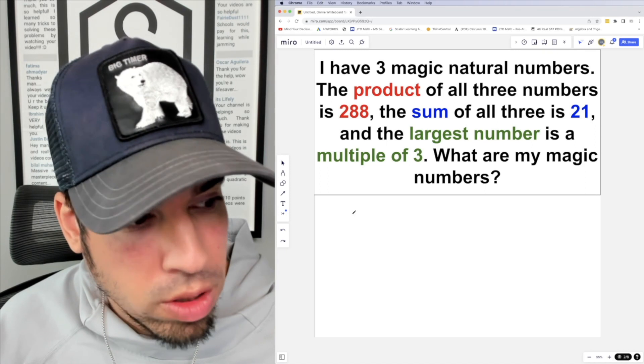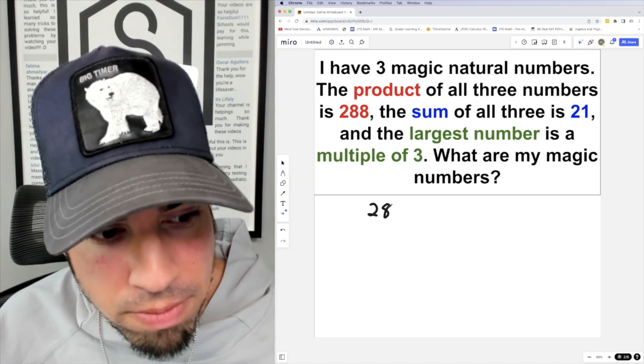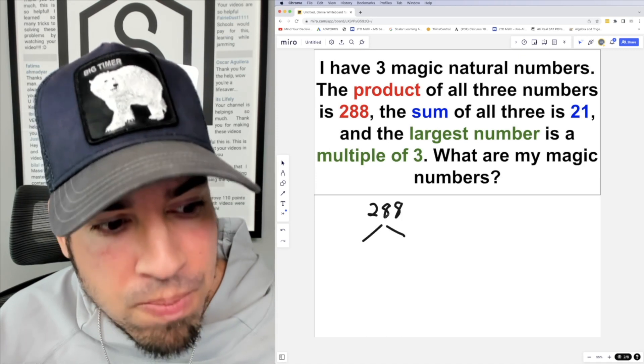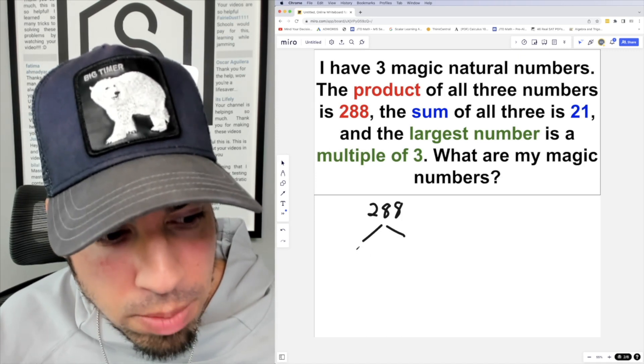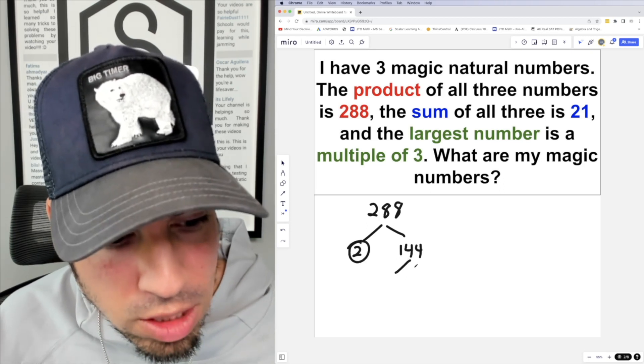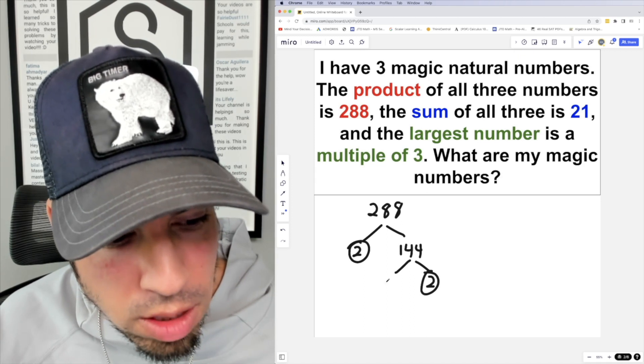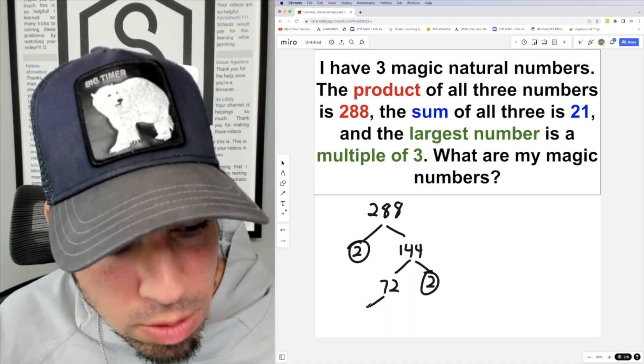So let's figure out what all the prime factors are of 288. We're going to do a little prime factorization tree. We're going to split it: 288 can be multiplied up to by 2 and 144. Since 2 is prime, we circle that. Let's split it again: 144 can be 2 and 72.